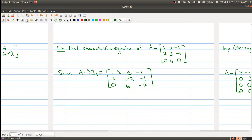Now because I'm interested in the characteristic equation, I need to find the determinant of this new matrix. So the determinant of this new matrix, I'm going to use my three by three trick. So I'm going to go down this diagonal. So I have 1 minus lambda, 3 minus lambda times negative lambda.